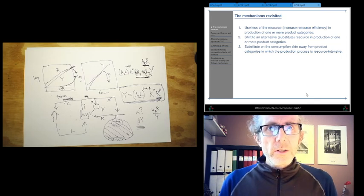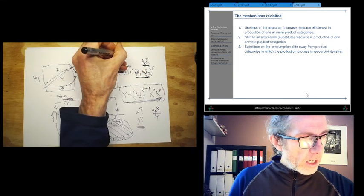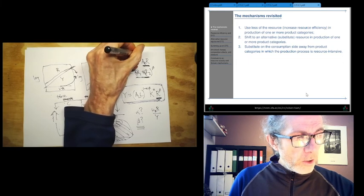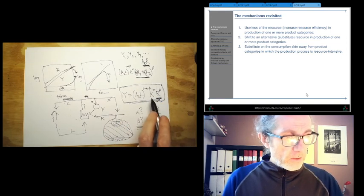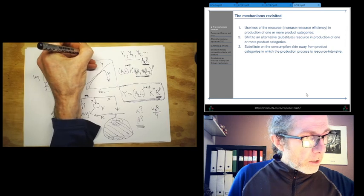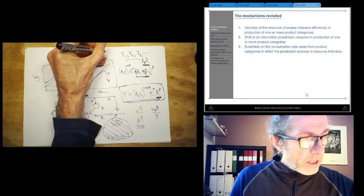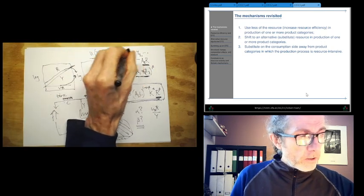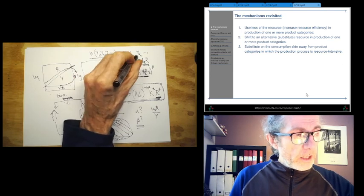And the third one: substitute between different product categories. So then we can say, oh, there's actually goods like Y1, Y2, Y3, with slightly different production functions. And then utility is some function of these. And then it's like, okay, what are the production functions for these?